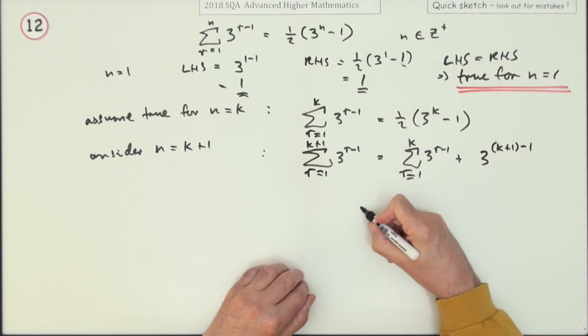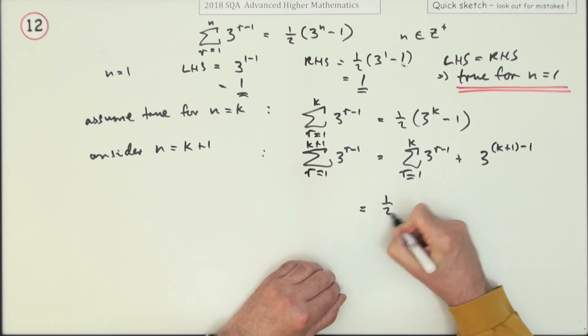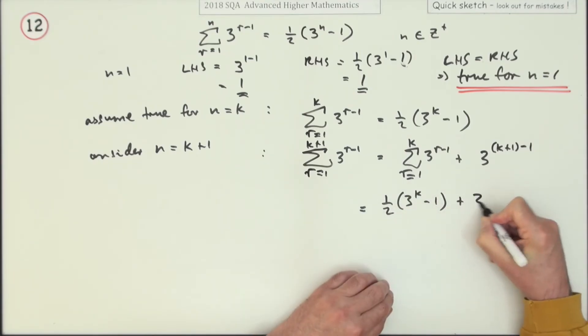I'm just going to bring this over a little bit so I've got a bit more room. Now by this bit here, that portion comes to this, that's a half of 3^k minus 1. And that's just 3^k again.